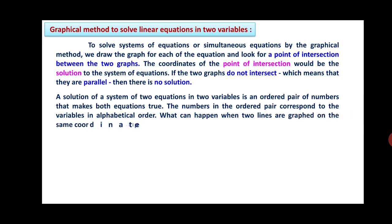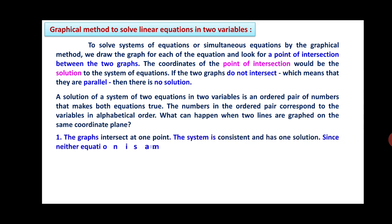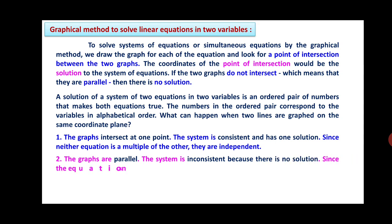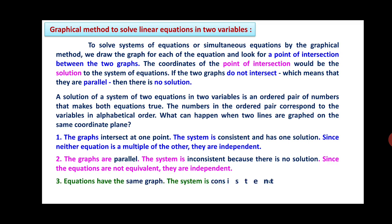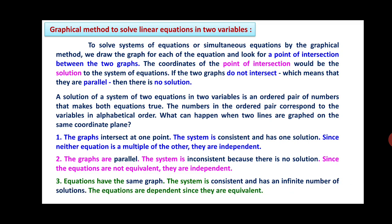A solution of a system of two equations in two variables is an ordered pair that makes both equations true, with the numbers corresponding to the variables in alphabetical order. When two lines are graphed on the same coordinate plane: first, if the graphs intersect at one point, the system is consistent and has one solution — since neither equation is a multiple of the other, they are independent. Second, if the graphs are parallel, the system is inconsistent because there is no solution, and the equations are independent. Third, if the equations have the same graph, the system is consistent and has an infinite number of solutions — the equations are dependent since they are equivalent.